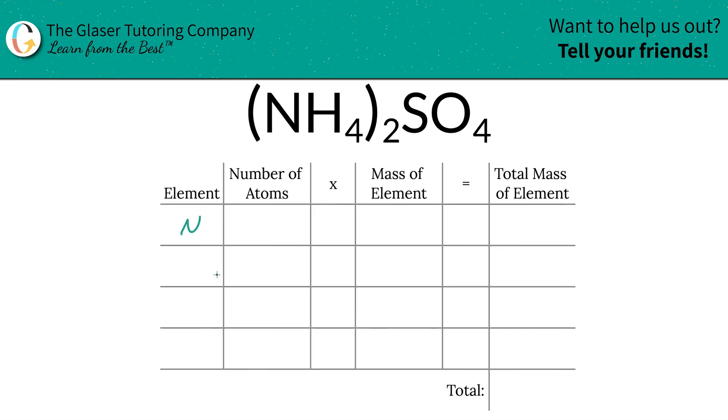So the first step of the process is that we're going to write down the elements we see in the compound. So we've got nitrogen, hydrogen, sulfur, and oxygen.